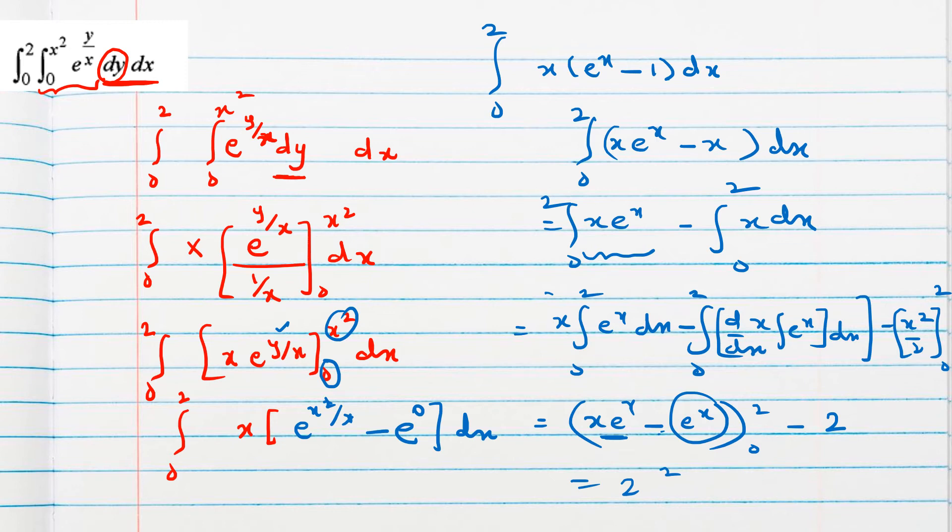First we are substituting value 2, so 2 e square minus e square. Then value 0, so first term will become 0, next term will become e power 0, and then finally this minus 2. So 2 e square minus e square, we can write e square, minus minus plus 1, minus 2. So finally, e square minus 1 is the answer.